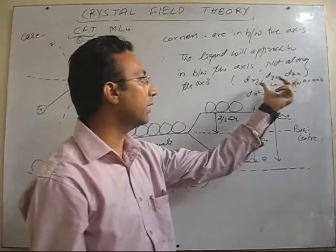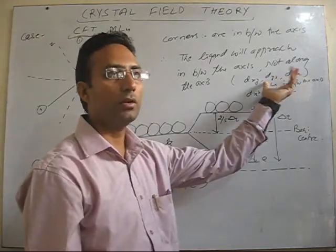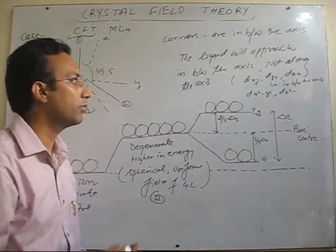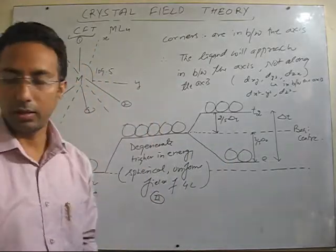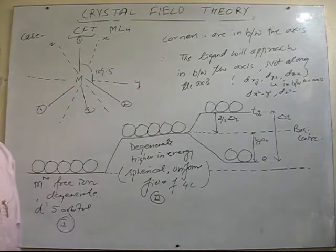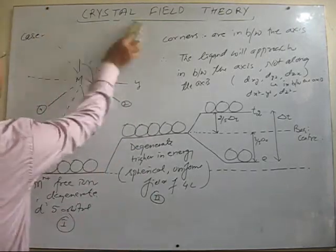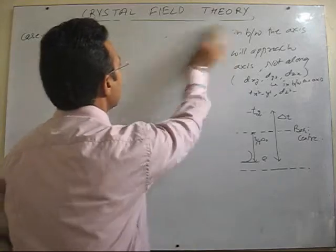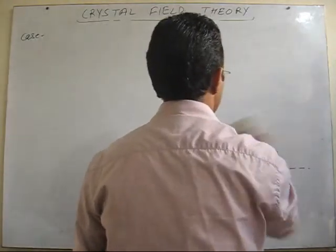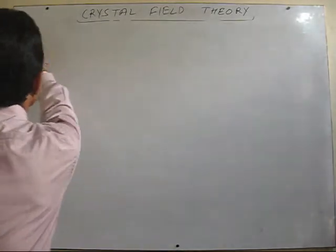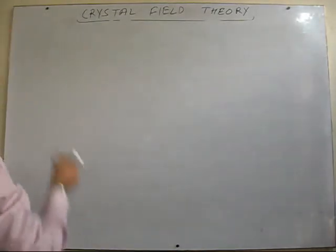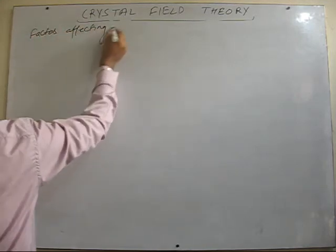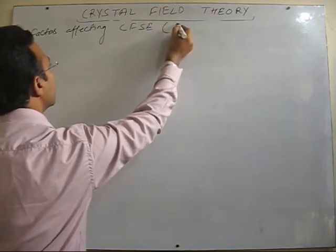The basic concept should be very clear: some d-orbitals have electron density in between the axes, some have it along the axis. From which direction the ligands are approaching, we have to consider, and accordingly we explain the splitting. This is crystal field splitting. After that, we will discuss a very important topic — what are the factors which influence delta, which is the difference between the two sets of split orbitals.